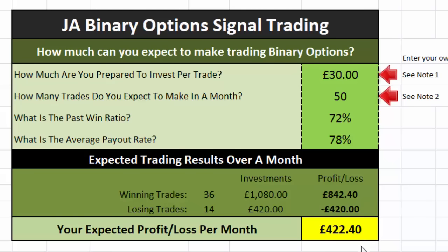But you've got to take away the cost of the John Anthony Signal Service, which is £99. You're still going to make over £300 profit. So is it worth paying £99 to make £300? I would certainly recommend it is.